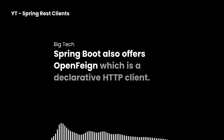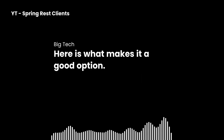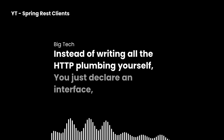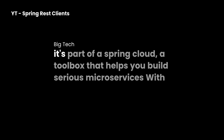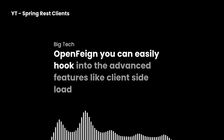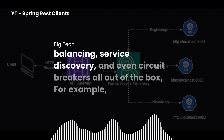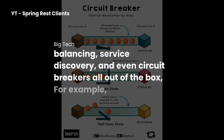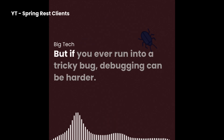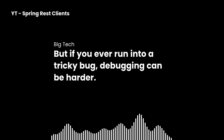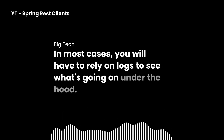Spring also offers OpenFeign, which is a declarative HTTP client. Instead of writing all the HTTP plumbing yourself, you just declare an interface, add a couple of annotations, and Spring generates the client code for you — it really feels like magic, no more boilerplate. But OpenFeign isn't just about saving time on REST calls. It's part of Spring Cloud, a toolbox that helps you build serious microservices. With OpenFeign, you can easily hook into advanced features like client-side load balancing, service discovery, and even circuit breakers, all out of the box. One thing to remember: OpenFeign is very abstract and hides a lot of low-level details. That's great for clean code, but if you ever run into a tricky bug, debugging can be harder — in most cases you'll have to rely on logs to see what's going on under the hood.